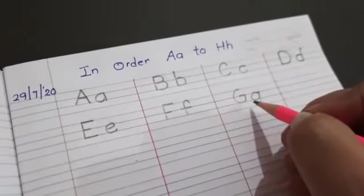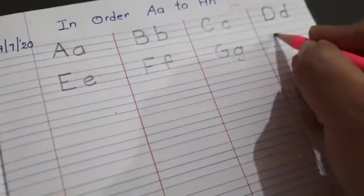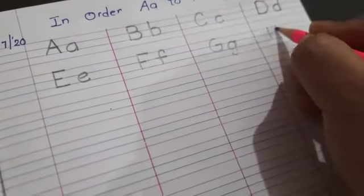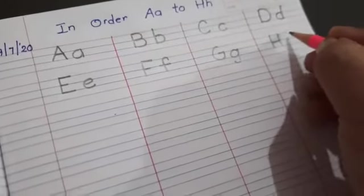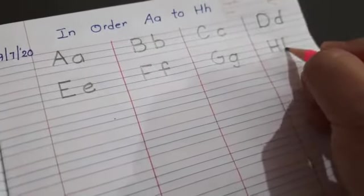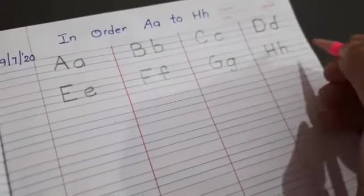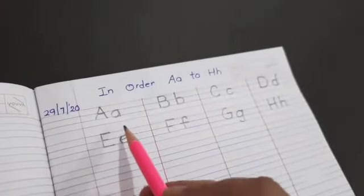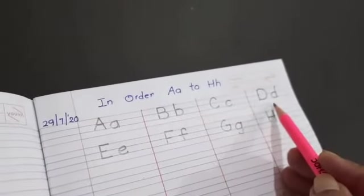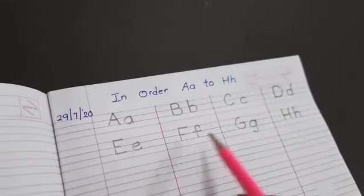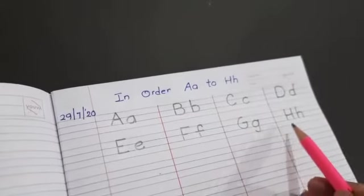Very good. Now what we will write? What comes after G? H. Capital H. Now we will write small h, like this. Now let us revise in order A to H: A, B, C, D, E, F, G, H.